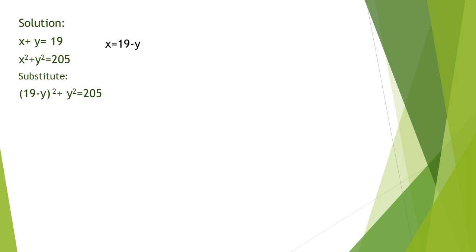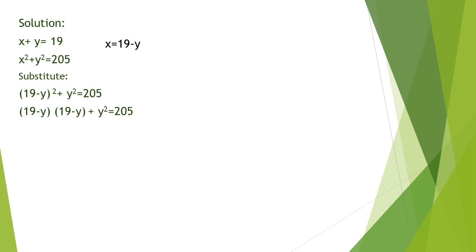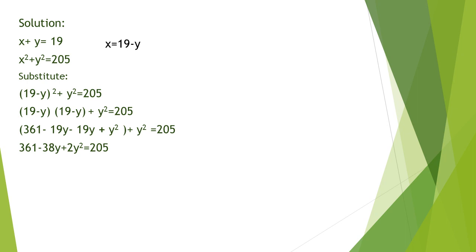19 minus y squared equals 19 minus y times 19 minus y, so the equation becomes 19 minus y times 19 minus y plus y squared equals 205. Expanding gives 361 minus 19y minus 19y plus y squared plus y squared equals 205, and combining like terms gives 361 minus 38y plus 2y squared equals 205. Combining constants gives negative 38y plus 2y squared equals negative 156.